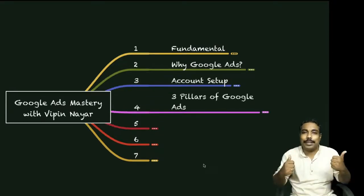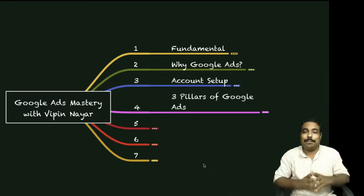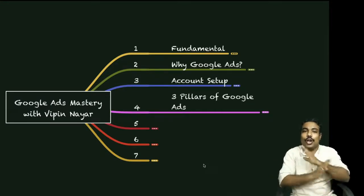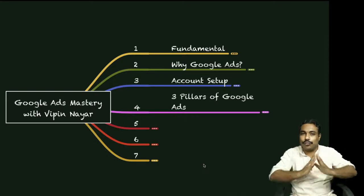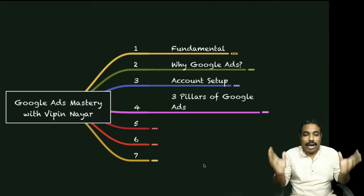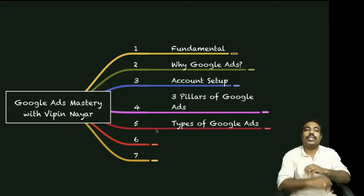The fourth section covers the Three Pillars of Google Ads, where we'll talk about campaigns, ad groups, and ads. These are the three main pillars you need to understand across all types of campaigns and ad formats.